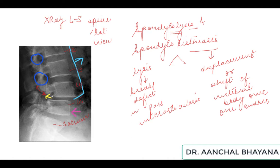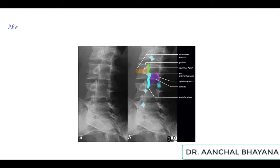Because of this defect, if you trace from the inferior aspect, you can see that L4 has moved anteriorly over L5. So due to the spondylolysis in the pars inter-articularis, there is anterior shift of L4 over L5. For comparison, the pars inter-articularis of L2 and L3 are intact — there is no fracture or break there, but at L4 there is a clear defect.